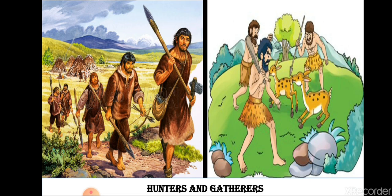Next, hunters and gatherers. Hunters are those who kill animals — they are the hunters. Gatherers are the persons who move from one place to another to collect the things they need. Early humans used to move from one place to another in search of food and in search of food for their animals. Basically, early humans were hunters and gatherers.